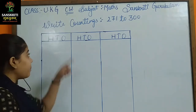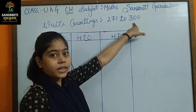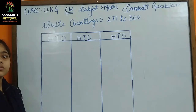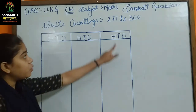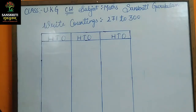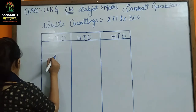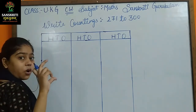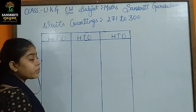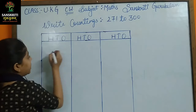Now I am going to take a right counting 271 to 300. In the last video I did 251 to 270. Now I am going to do 271 to 300. We will start — hundreds, tens, ones — I am going to touch the line, touch the box, touch the numbers. So we will start with 271.